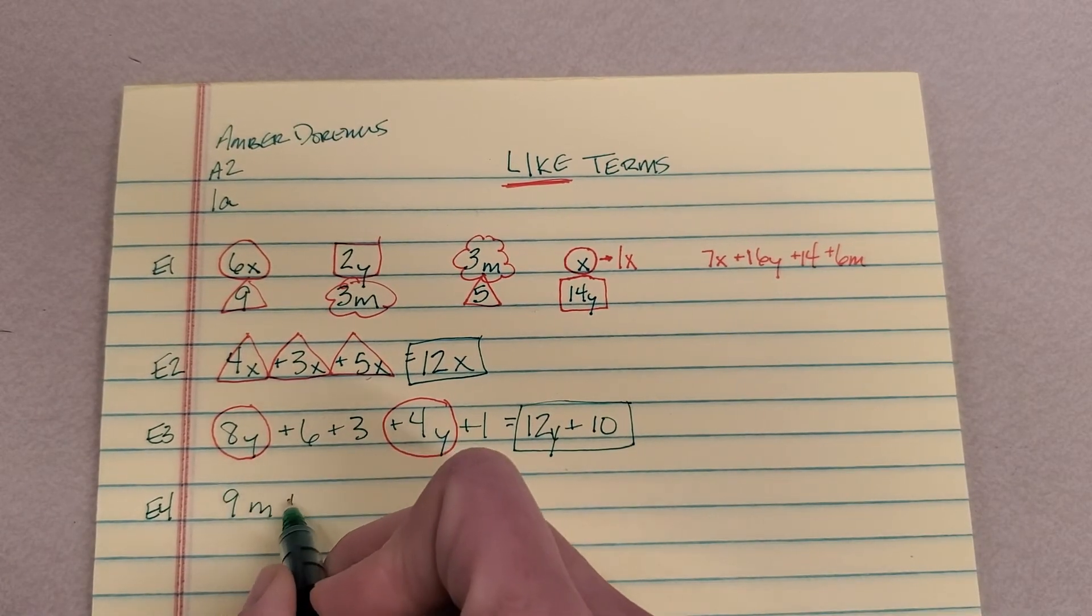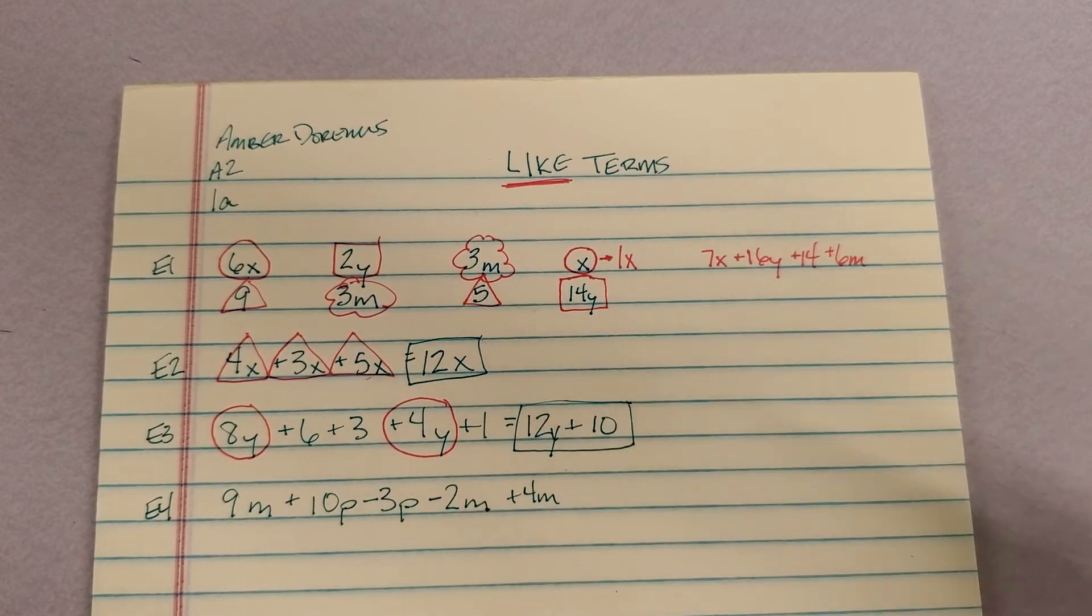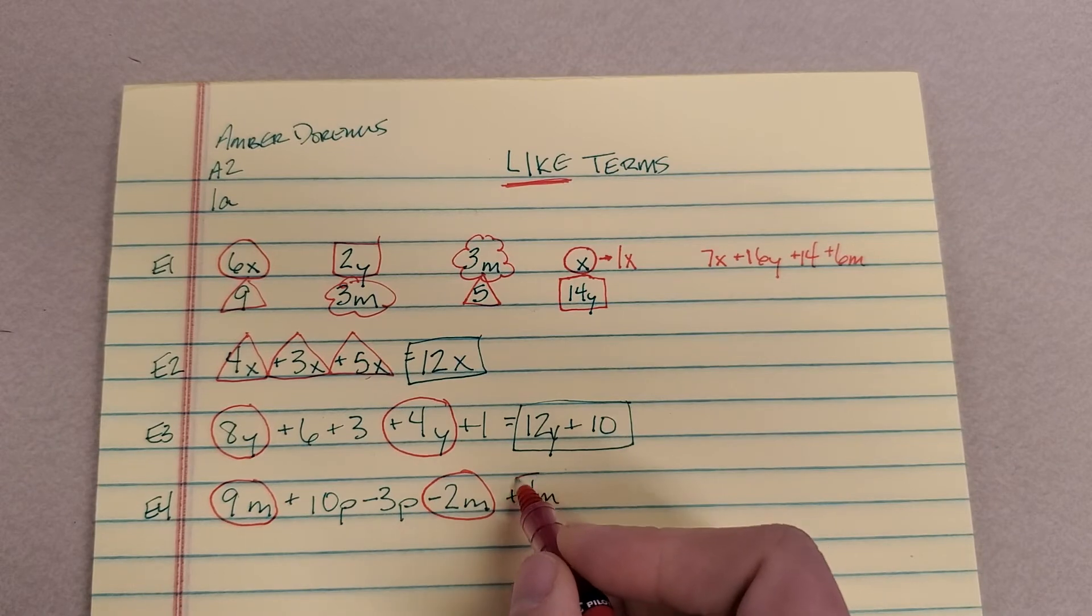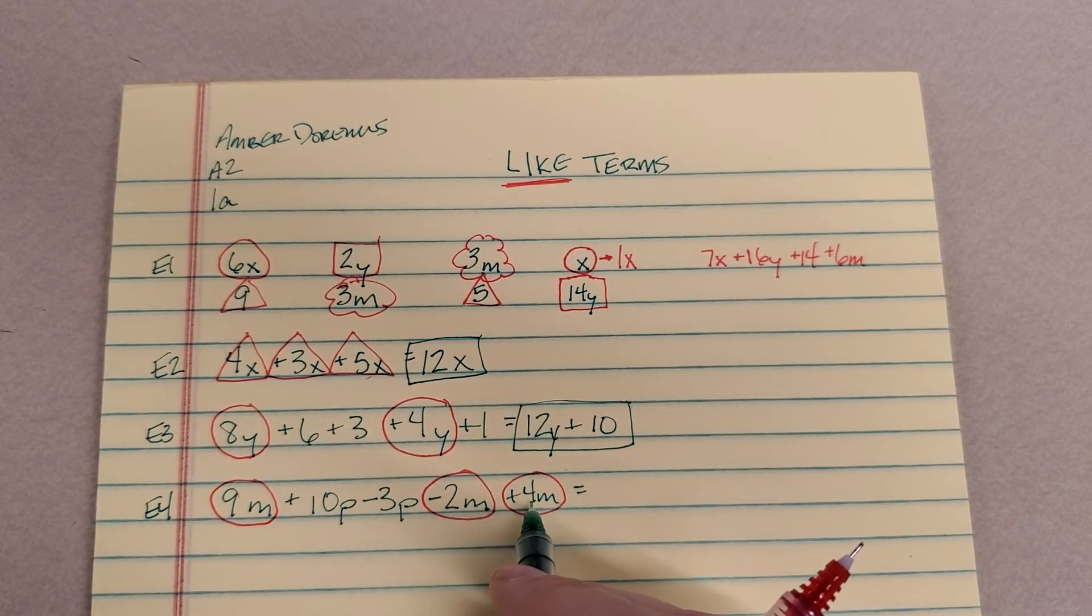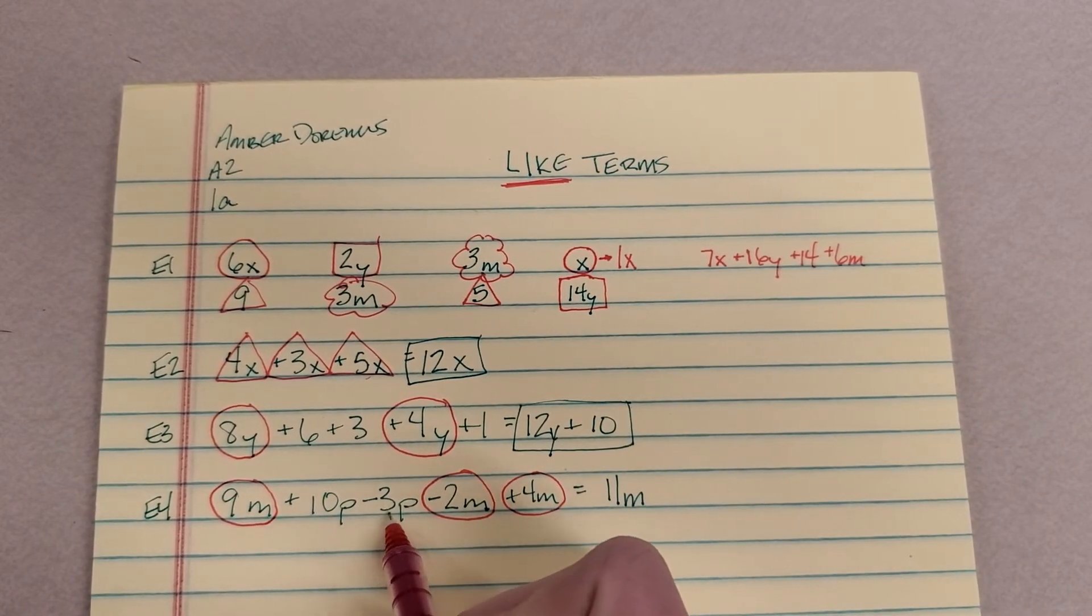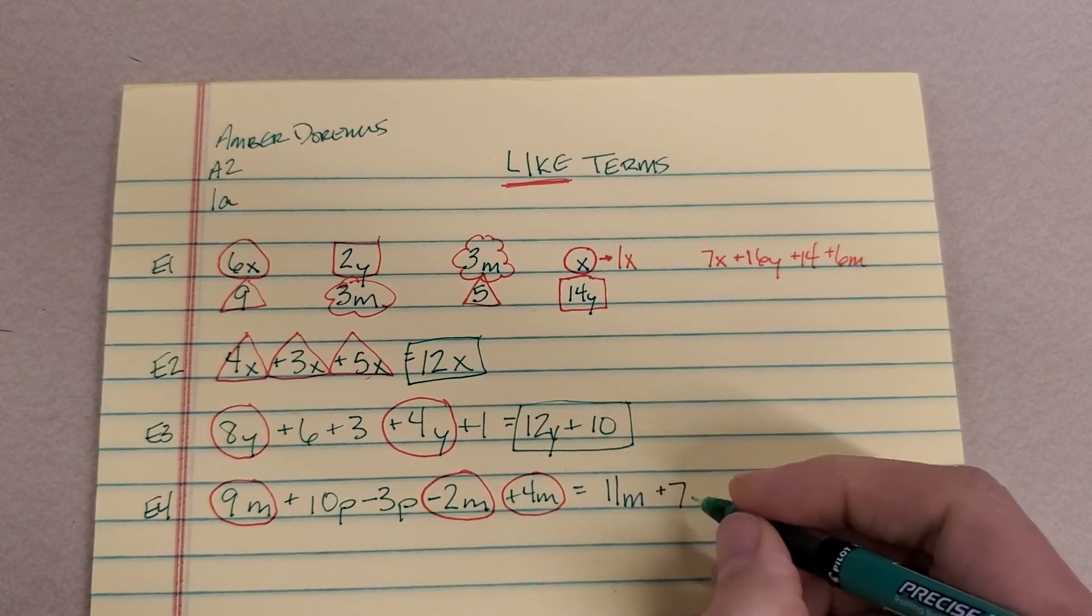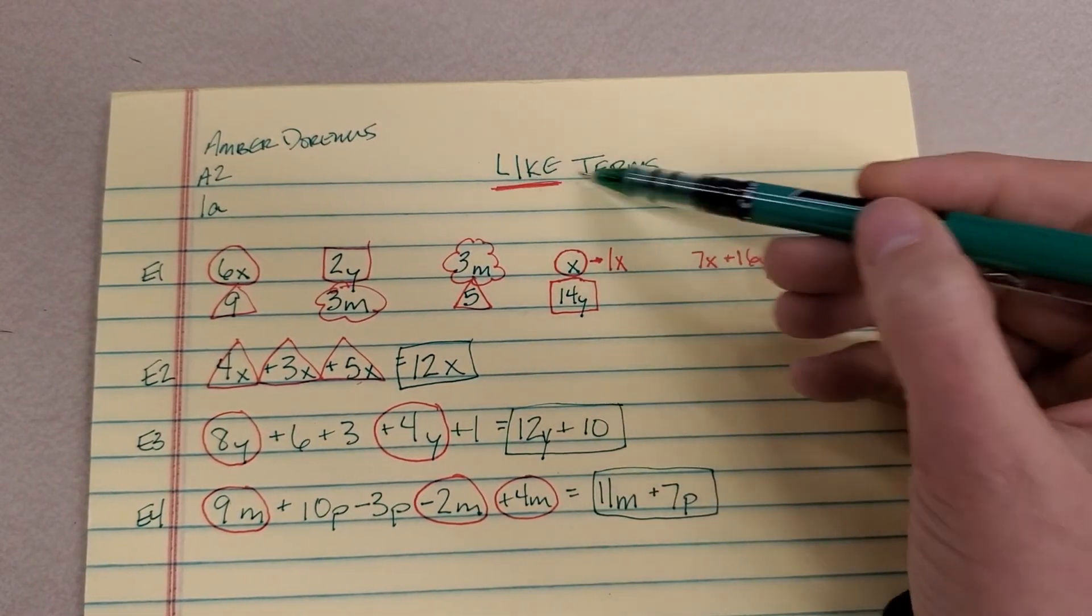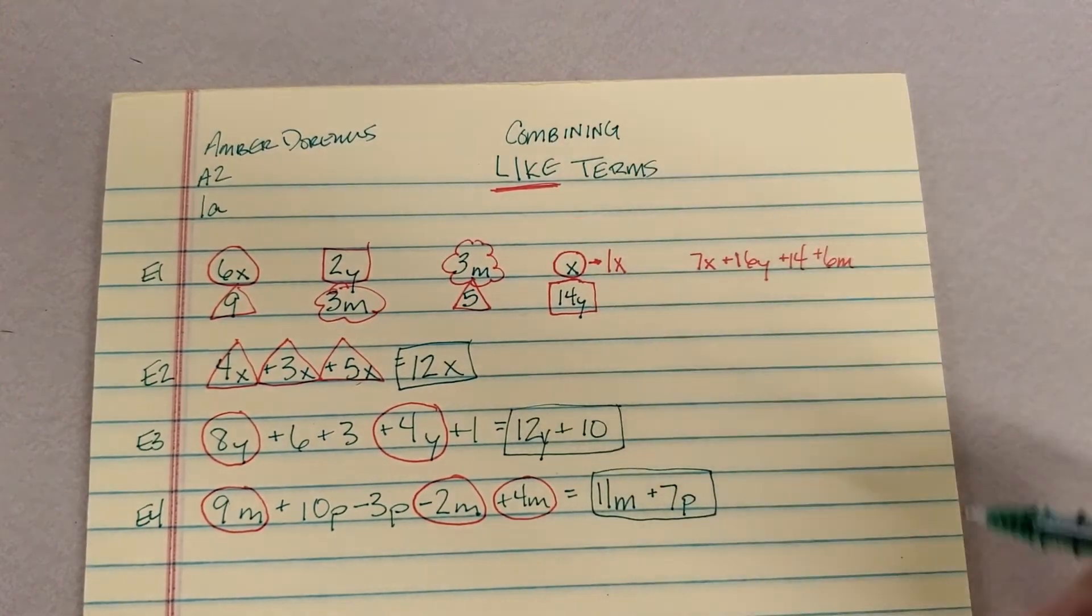How about 9M plus 10P minus 3P minus 2M plus 4M? Let's look for like terms. Let's do M's first. I have 9M's, then I'm going to take away 2M's and add 4M's. 9 take away 2 is 7, and 7 plus 4 is 11M's. What else do I have left? P. I have a positive 10P minus 3P, which is 7P. So what we're doing here is not just finding like terms, we're now combining like terms.